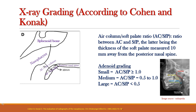As per this grading, the adenoid is graded as small if the ratio between the air column and the soft palate is more than or equal to 1. It is graded as medium if the air column to soft palate ratio is 0.5 to 1. Similarly, it is graded as large if the air column to soft palate ratio is less than 0.5, because as the air column to soft palate ratio decreases, the size of the adenoid becomes large.